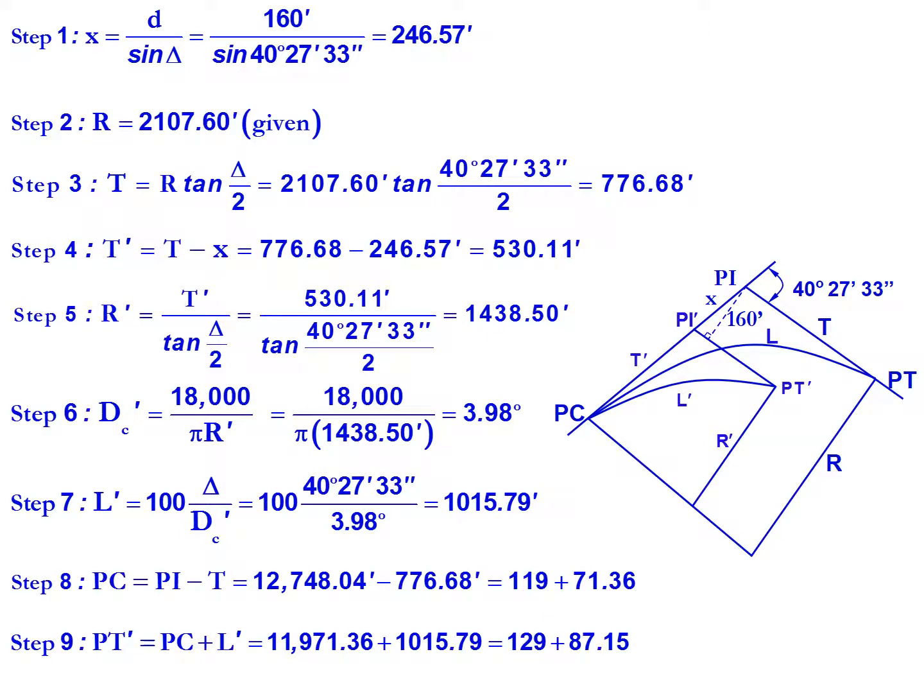And from that we can find our new PT, PT prime, which is equal to the PC plus our new length L prime. So 11,971.36 plus our new length 1015.79 feet gives us a PT station of 129 plus 87.15.